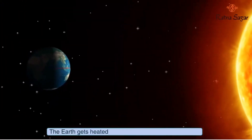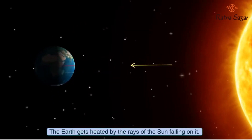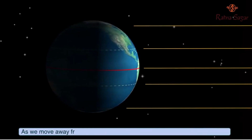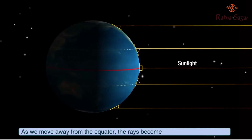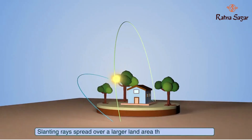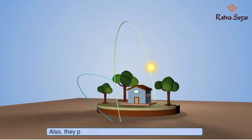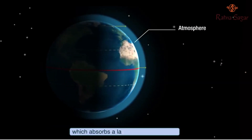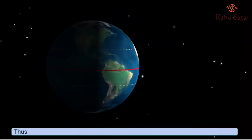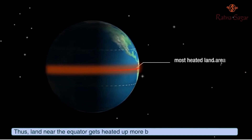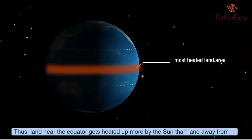The Earth gets heated by the rays of the Sun falling on it at the equator. The rays fall vertically. As we move away from the equator, the rays become more and more slanting. Slanting rays spread over a larger land area than the vertical rays. Also, they pass through a thicker layer of the atmosphere which absorbs a large part of their heat. Thus, land near the equator gets heated up more by the Sun than land far away from it.